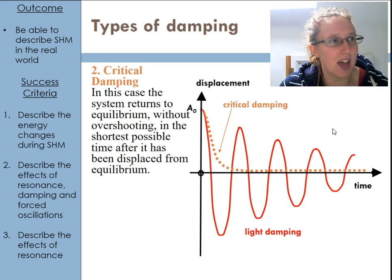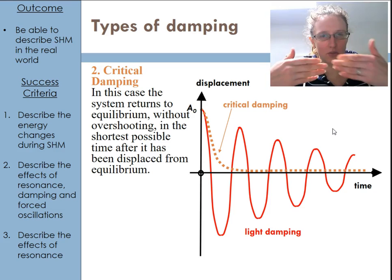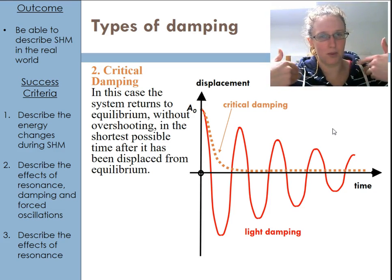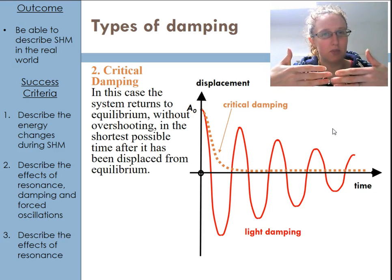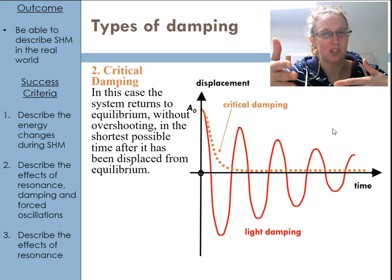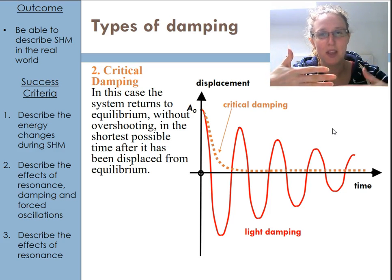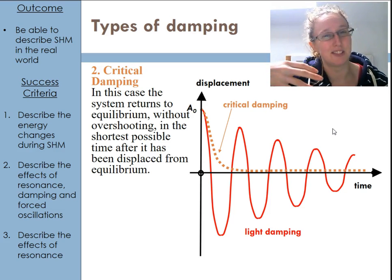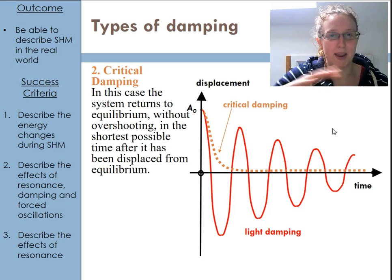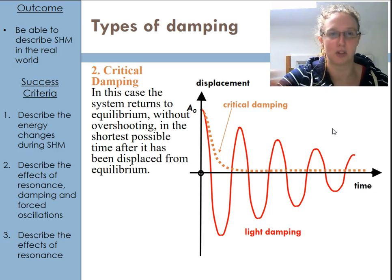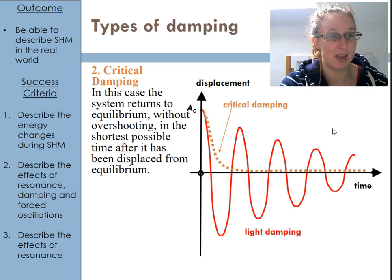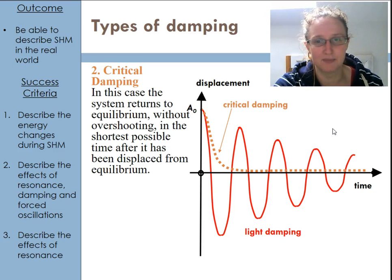The main example of critical damping is those doors that can swing both ways. Sometimes you swing through one and it very slowly just returns back to equilibrium. That would be critical damping — they've made the system so the door doesn't bounce back and forwards, but just goes straight back to shut.